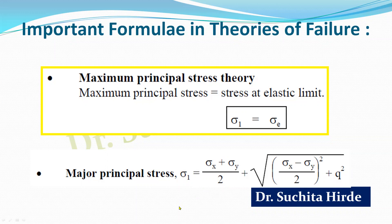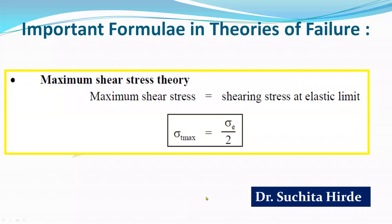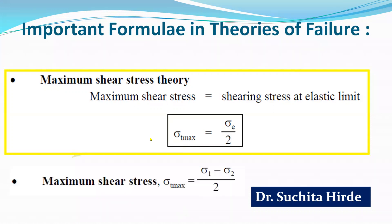Next is maximum shear stress theory, also called Tresca's theory. In this theory, we calculate the permissible shear stress, which equals the stress at elastic limit divided by 2. This permissible shear stress is equated to the maximum shear stress, which is (σ₁ − σ₂)/2. Equate these two to get the unknown quantities.